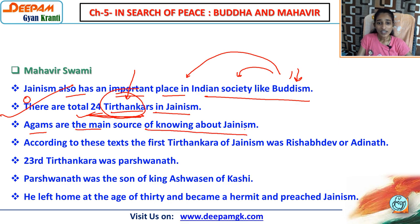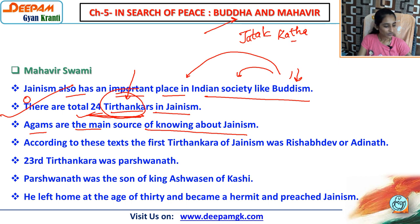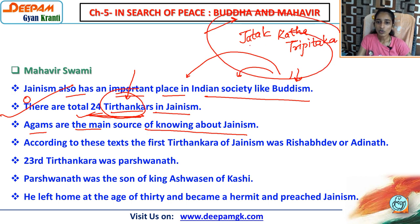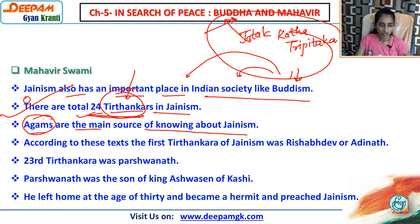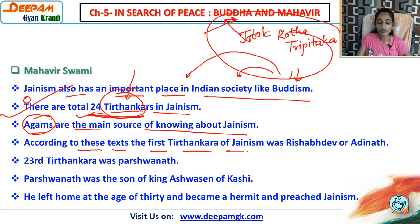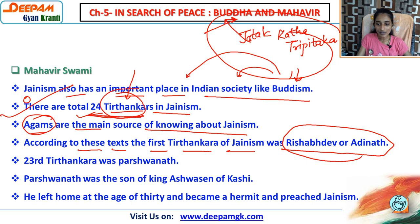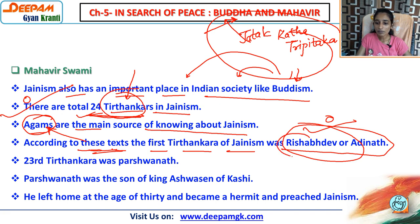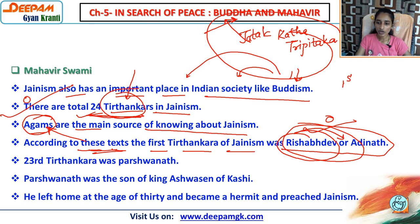The Agams are the main source of knowing about Jainism. In Buddhism we have the Jhatak Katha and the Three Pitaks as sources of information, but in Jainism the main source is the Agams. According to these texts, the first Tirthankar of Jainism was Rishabhdev, who was also known as Adhinath. So you have to remember: first Tirthankar was Rishabhdev or Adhinath.